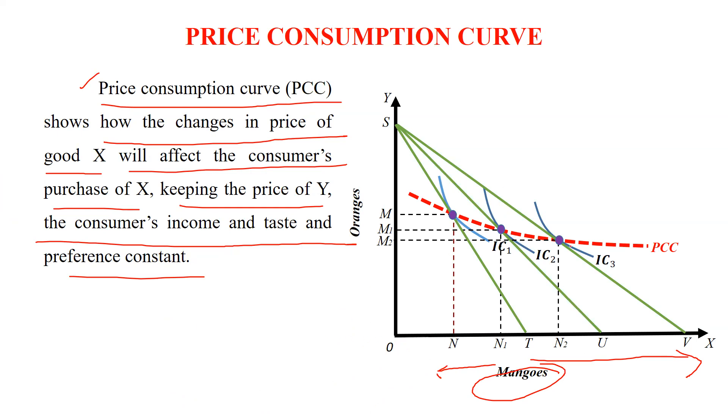Now you can see these green lines show oranges prices constant, not fluctuating, not changing. These are budget lines V, S, U, and T. These all are three budget lines.